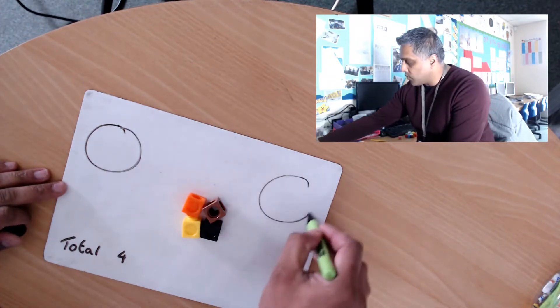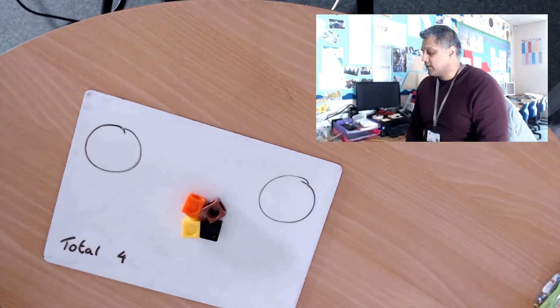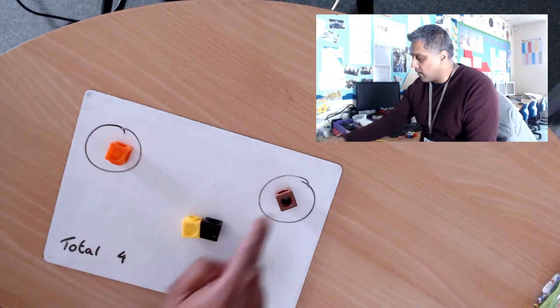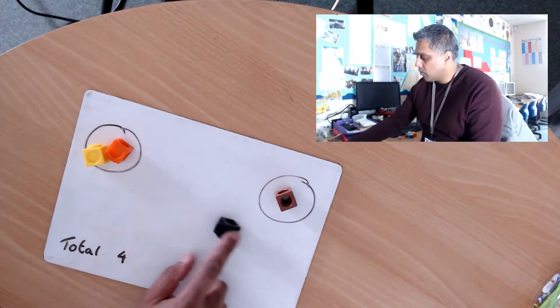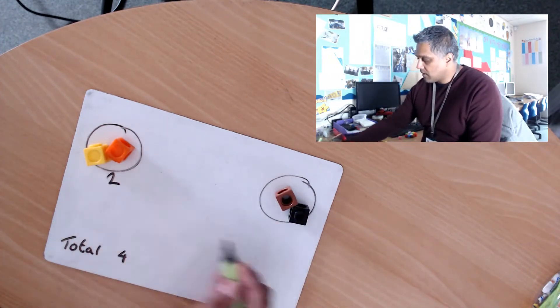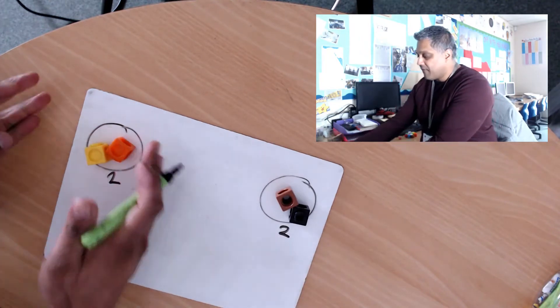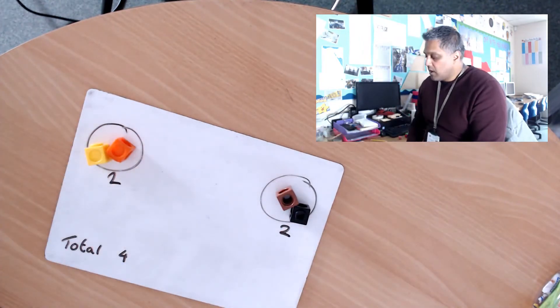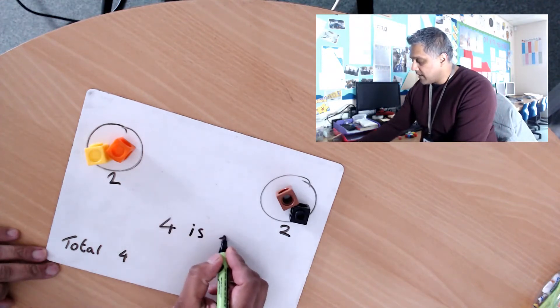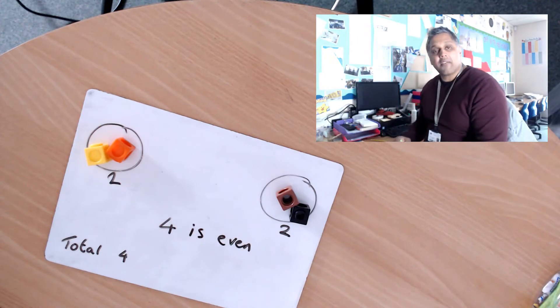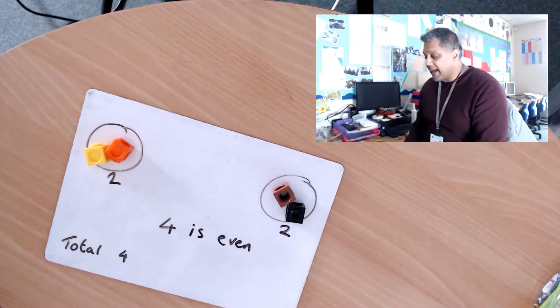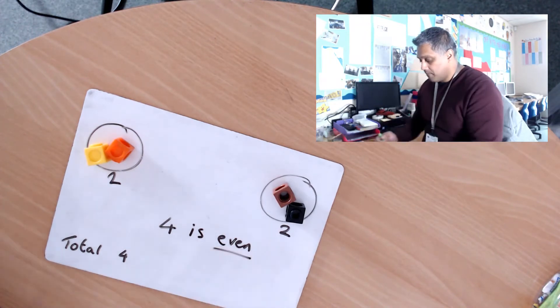So one for me, one for you, one for me, one for you. So in each group I have two and another two. We have the equal amount in each group, so we can say that four is even because we have an equal amount of objects in each group. That's what I mean by an even number.